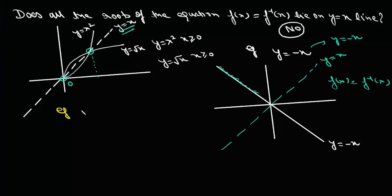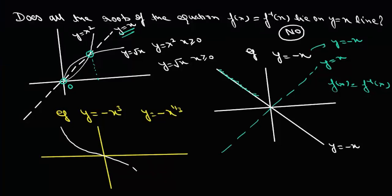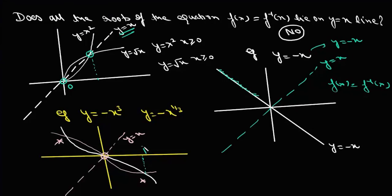Let us take another example. Suppose we have y equals minus x cubed. Its inverse function will be y equals minus x to the power 1 by 3. Now y equals minus x cubed and y equals minus cube root of x will intersect at three points. One of the roots lies on y equals x line, but there are two more roots which do not. Here it will have three points of intersection: one is 1, another is 0, and the third is minus 1.